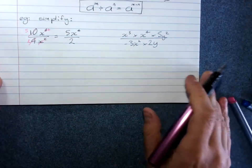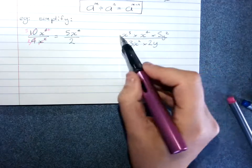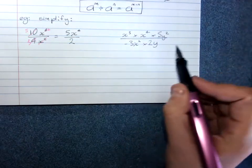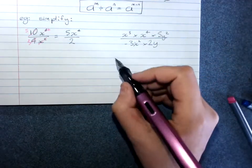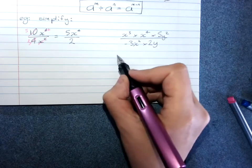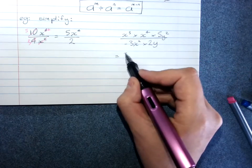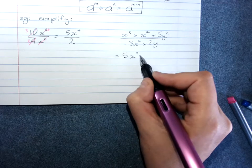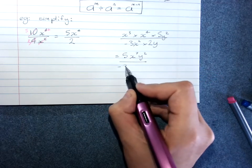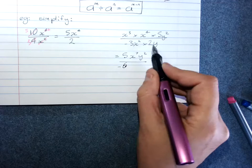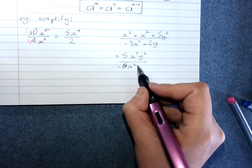When we're combining the rules a good idea to simplify what's on top and bottom first and then start cancelling unless there's anything really obvious. So on the top here we'll have 5 x to the 7 y squared over negative 6. That's 2 times 3. x squared y.